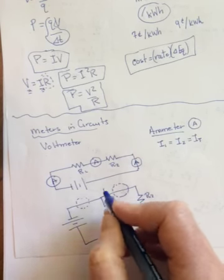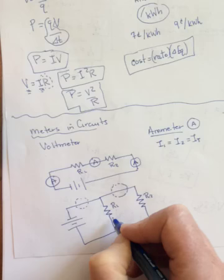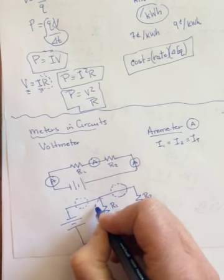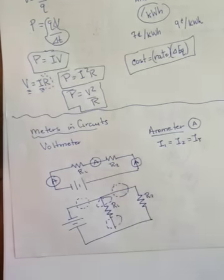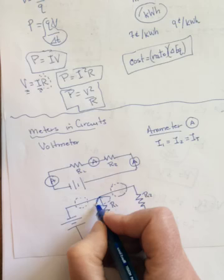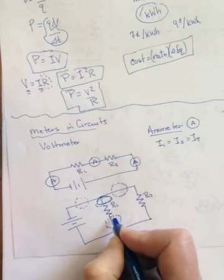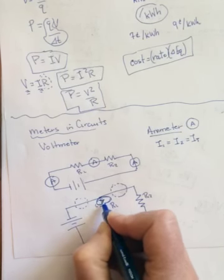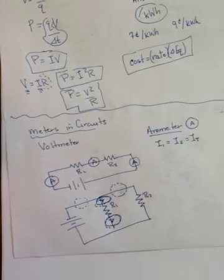To measure the current going through R1, I have to put it on the branch with R1. And I could put it before or after, not set in the way that I was drawing it. It could go either here or here. Because again, in series, the I's are the same.